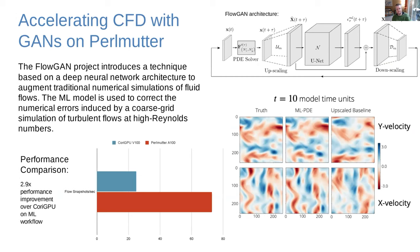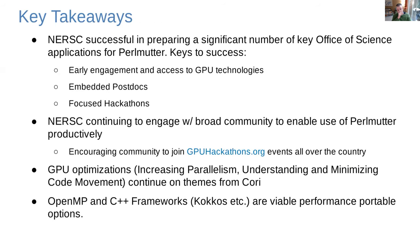The last science story is accelerating fluid dynamics applications with GANs on Perlmutter. A group is replacing part of the fluid dynamics simulation with a trained GAN neural network. We're again seeing big improvements over the previous generation V100s compared to the A100s — in this case a 2.9x performance improvement in the machine learning workflow. That's something a number of you will likely see when applying your machine learning workflows to Perlmutter.